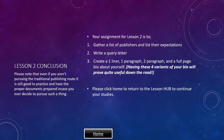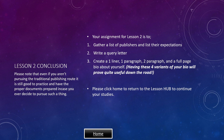Lesson 2 Conclusion. Please note that even if you aren't pursuing the traditional publishing route, it is still good to practice and have the proper documents prepared in case you ever decide to pursue such a thing. Your assignment for Lesson 2 is to gather a list of publishers and list their expectations, write a query letter, and create a one-liner, a one-paragraph, a two-paragraph, and a full-page bio about yourself. Having these four variants of your bio will prove quite useful down the road. If you don't have access to the Writer's Market 2021 guide by Robert Lee Brewer, you can always research publishing companies, visit their websites, look up their agents' names, and try to reach out to them on Twitter yourself.